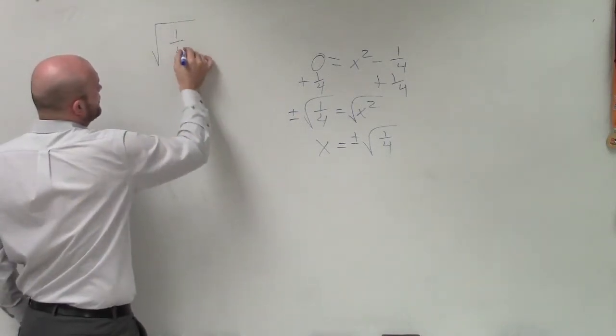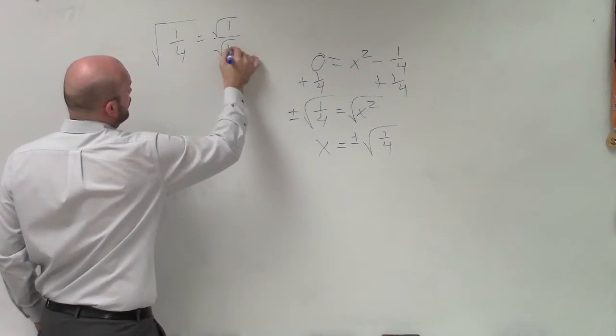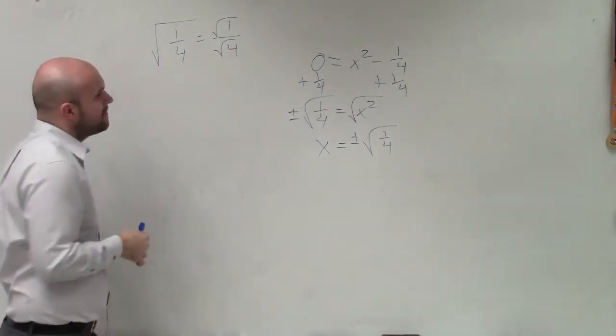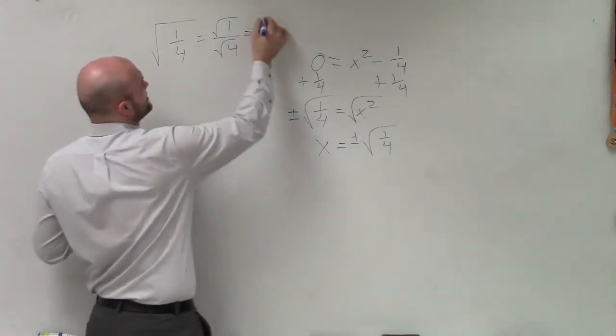The square root of 1 fourth can be broken down into the square root of 1 over the square root of 4. And in this case, you could see that the answer is 1 half.